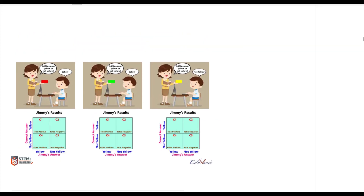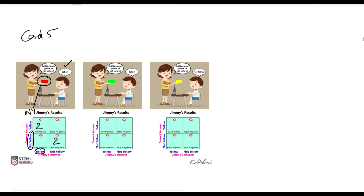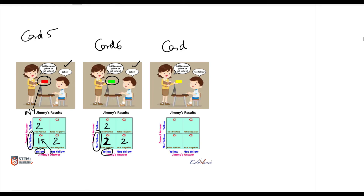For card 5, she shows him a red card and Jimmy makes a mistake and says yellow. The teacher showed him a not-yellow card but Jimmy answered yellow — this is a false answer, so we fill 1 in a false cell. For card 6, she shows him a green card and Jimmy again answers yellow, so the false cell count increases to 2.